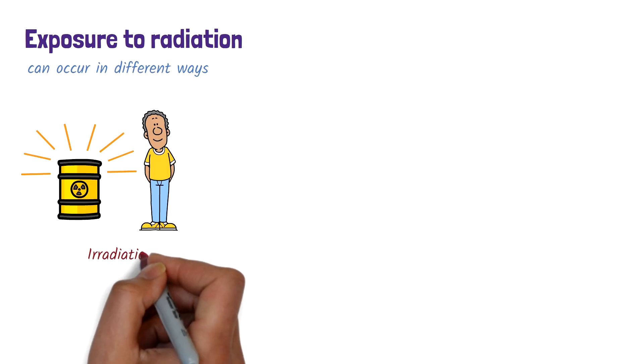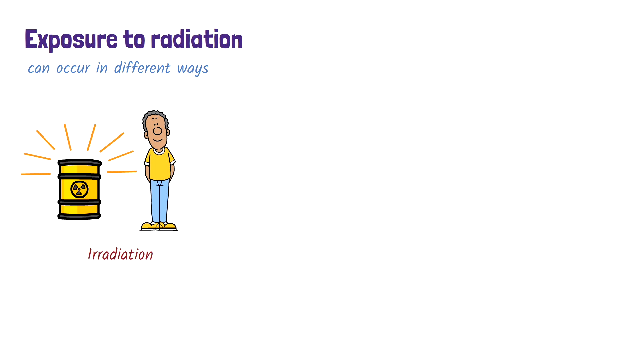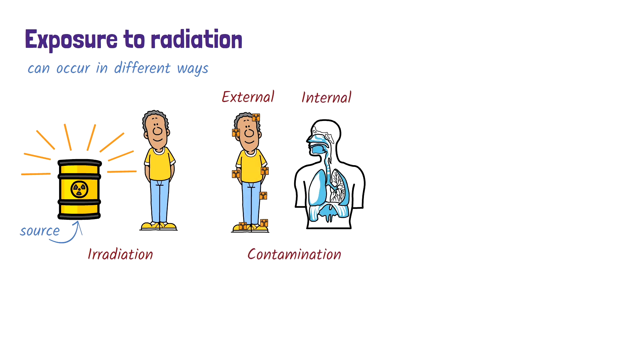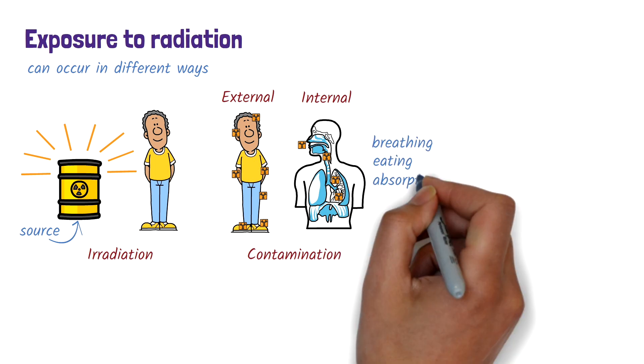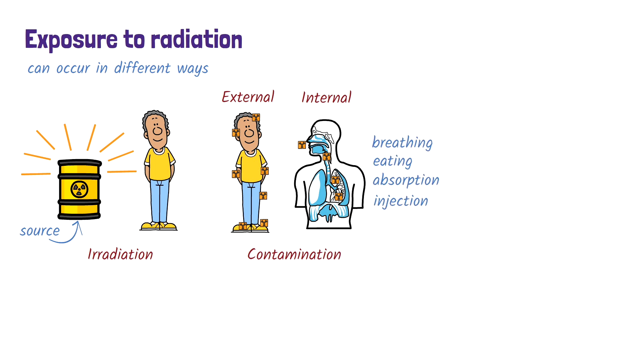Now let's have a look at how radiation exposure occurs and the health effects. Exposure to radiation can happen in different ways. One type is called irradiation. This happens when the body is exposed to penetrating radiation from a source. Another type is contamination. External contamination refers to radioactive materials that settle on the body's surface, such as the skin, hair, or clothing. Internal contamination occurs when radioactive materials enter the body through breathing, eating, absorption through the skin, or injection. If those radioactive materials are absorbed and taken up by cells, tissues, or organs, this process is called incorporation.